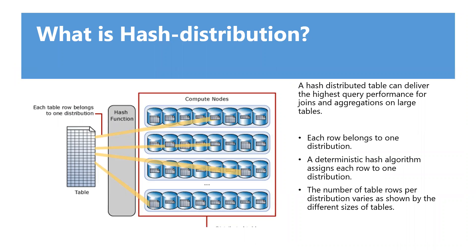What is hash distribution? A hash-distributed table can deliver the highest query performance for joins and aggregations on large tables. To shard data into a hash-distributed table, a hash function is used to assign each row to one distribution. In the table definition, one column is designated as the distribution column. The hash function uses the values in that column to assign each row to a distribution.